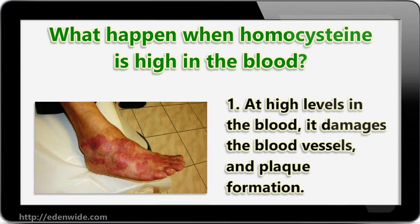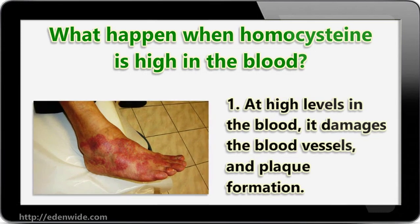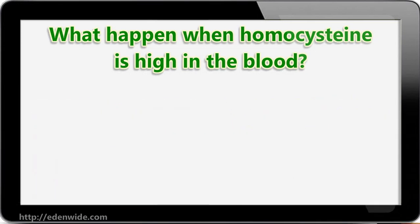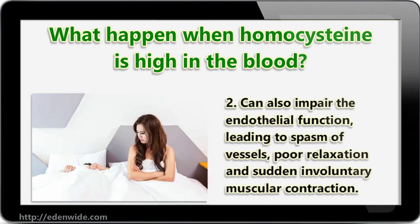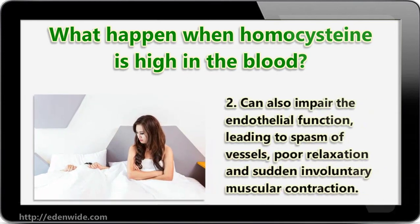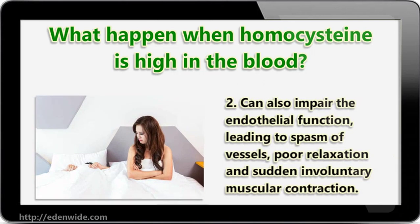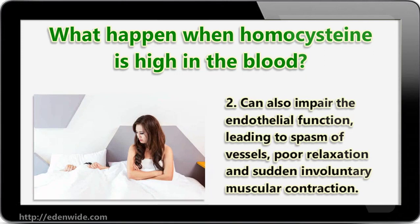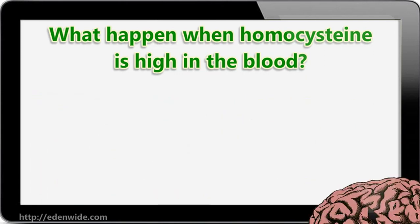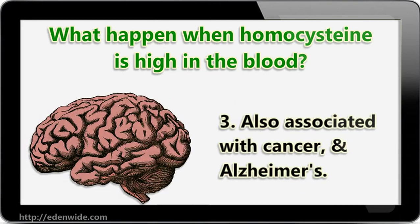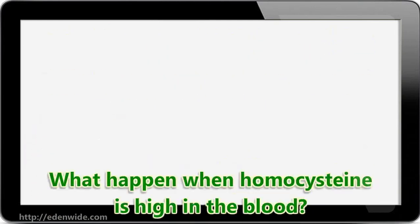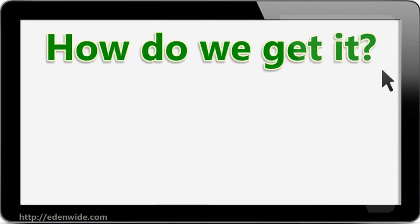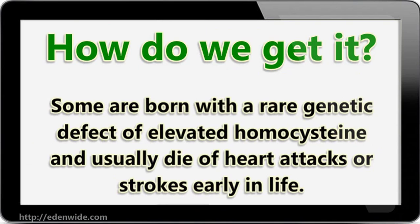It can also impair the endothelial function, leading to spasm of vessels, poor relaxation, and sudden involuntary muscular contraction. High homocysteine is also associated with cancer and Alzheimer's.